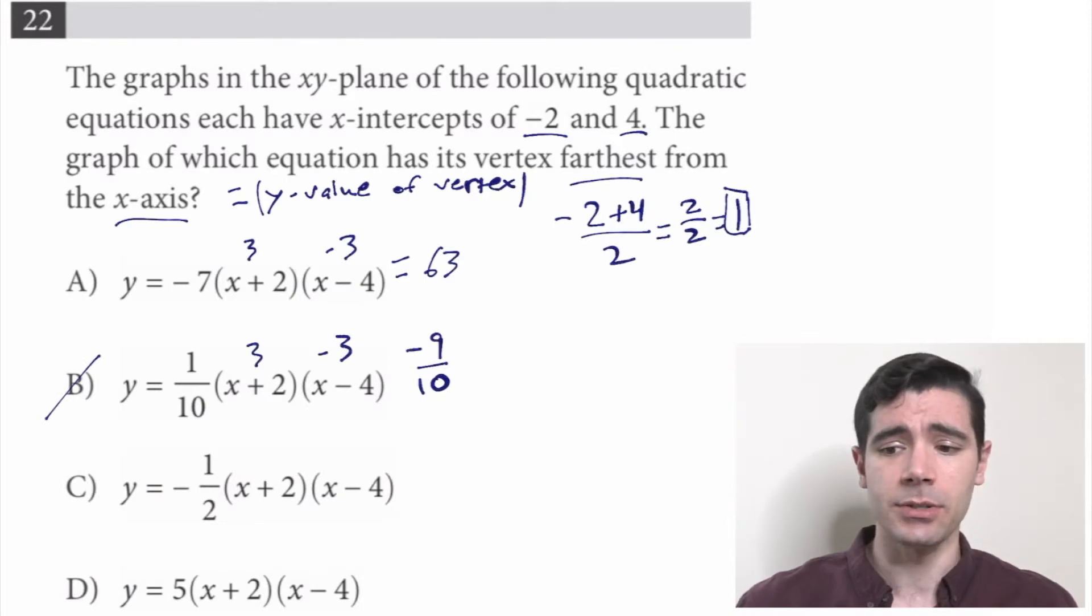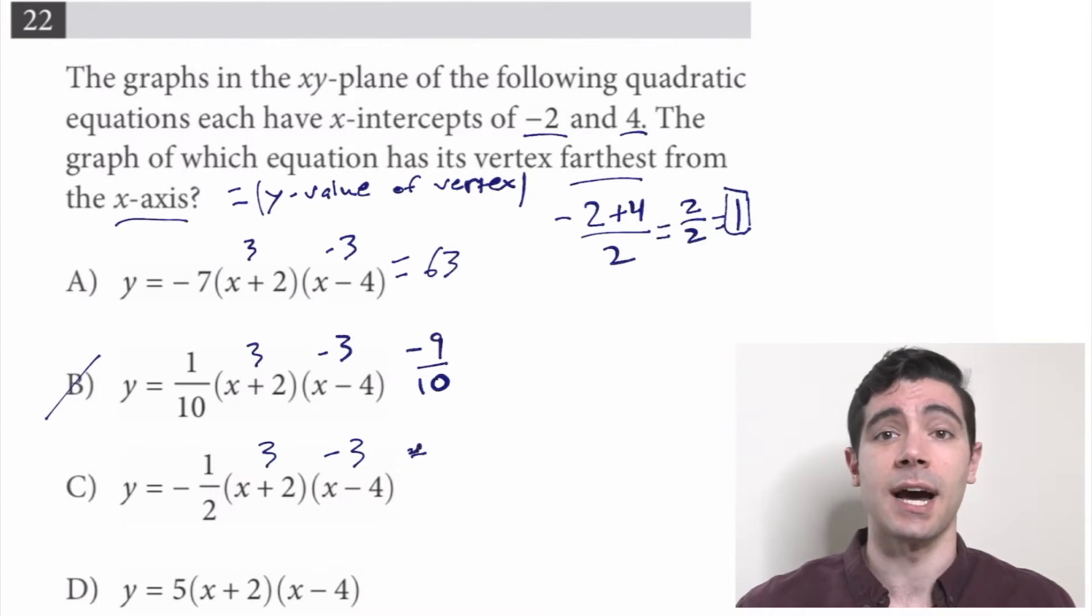We cross it off. Then we go to C. Same roots, so it's negative 9 times negative 1 half, or positive 9 halves. Again, funky fraction, but not nearly as big as 63. So the answer is not C.